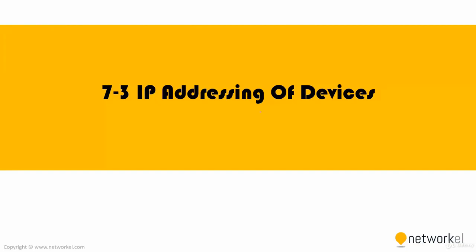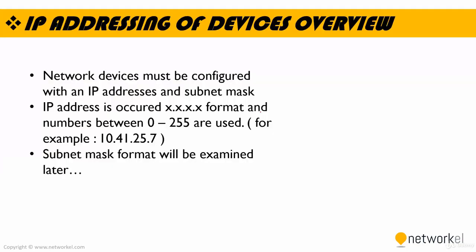In this section, we'll talk about the IP addressing of devices. Network devices must be configured with an IP address and subnet mask. An IP address has a format using numbers between 0 and 255. For example, 10.41.25.7 is an example of an IP address. Subnet mask format will be examined later.